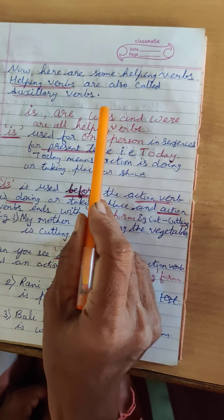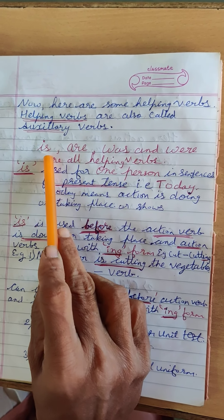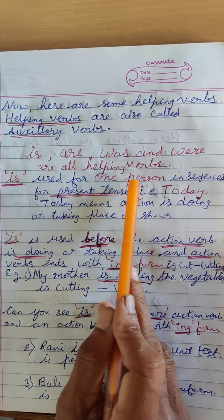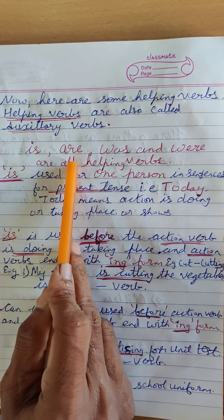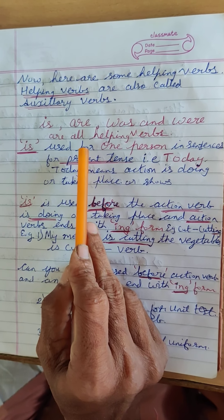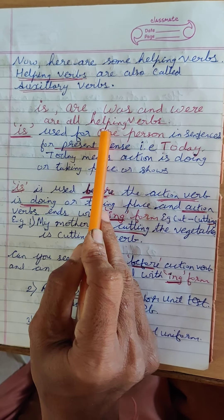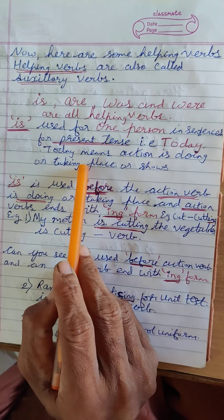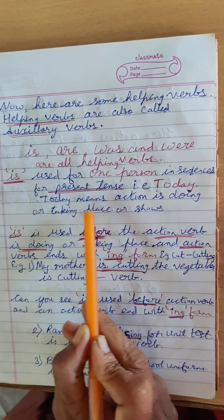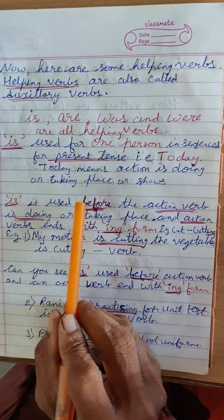Now some more helping verbs we are going to learn. Some helping verbs are: is, are, was, and were. All these are helping verbs. Is and are are used in the present tense — meaning today. What action takes place today will use the helping verb is or are with the verb ending in -ing form. Is is used for one person in the sentence — meaning the action is being done by one person.